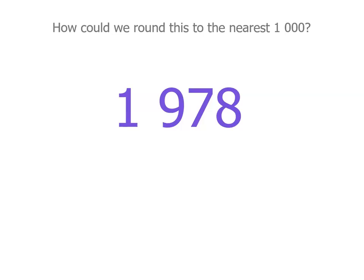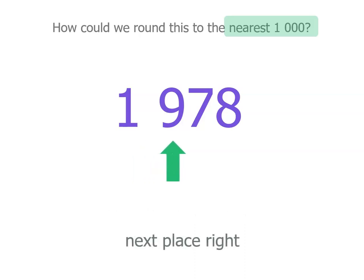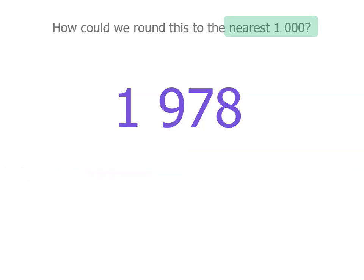When we look at thousands, we use the same rule. How could we round 1,978 to the nearest 1,000? We start at the thousands place and we've got a 1, so we're wondering if it's closer to 1,000 or 2,000. We move one place to the right. If that's 4 or less, we round down; if it's 5 or more, we round up. The 7 and 8 we don't need to look at. We've got a 9, so we're rounding up — 1,978 is closer to 2,000.